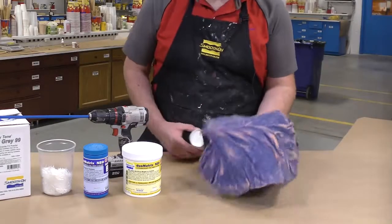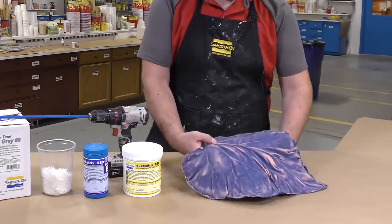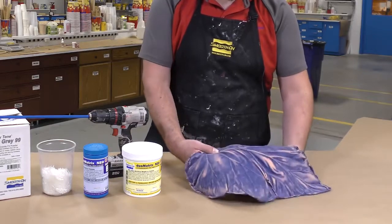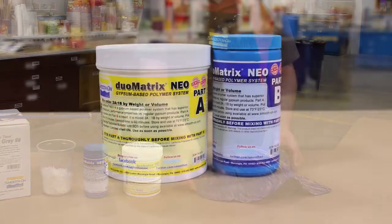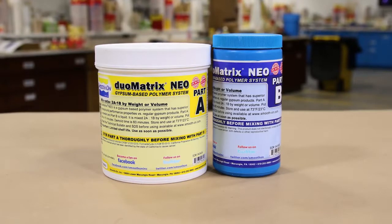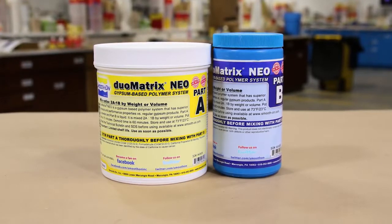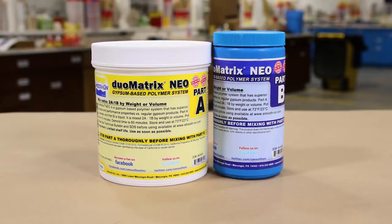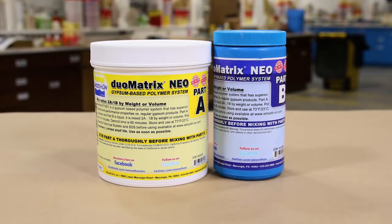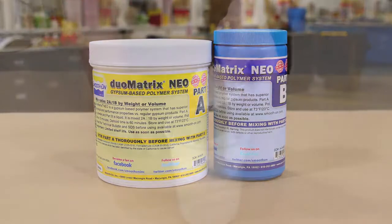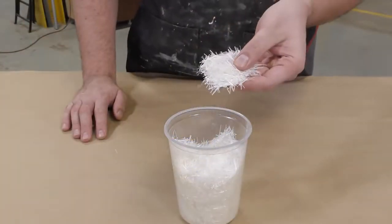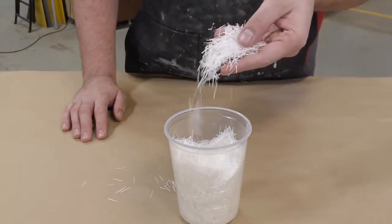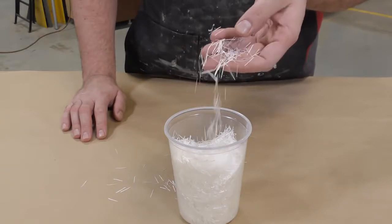Using a cup I am going to prop up this mold to give our casting a bowl-like shape. I have chosen to use the Duo Matrix Neo for this project because it has a convenient 2 to 1 mix ratio by volume and can be laid out by hand with some chopped fibers to create a lightweight and strong casting. You want to make sure to use E-Glass fibers, not other fibers that may not be compatible with this product.